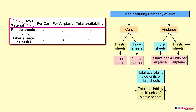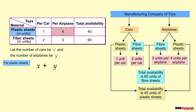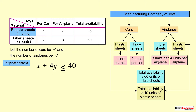This problem can be formulated as an LPP. Let the number of cars be x and the number of airplanes be y. If the company makes x cars, it requires x units of plastic sheets. If it makes y airplanes, it requires 4y units of plastic sheets. Since the total availability of plastic sheets is 40 units and it cannot exceed that, the required inequality is x + 4y ≤ 40.